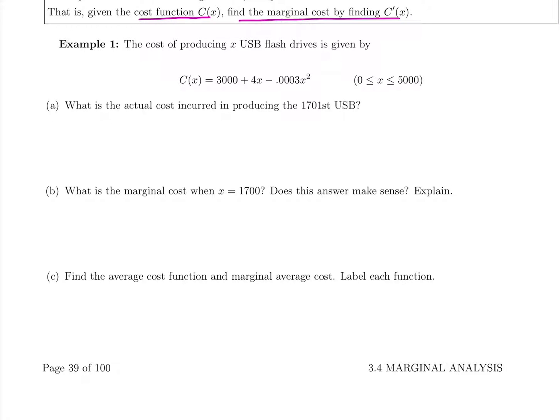The cost of producing X USB flash drives is given by this capital C of X, which stands for our total cost function. We have the domain X is greater than or equal to zero but less than or equal to 5,000. That just tells us the company can produce between zero and 5,000 USBs in a given period, so we keep our answers within that domain.